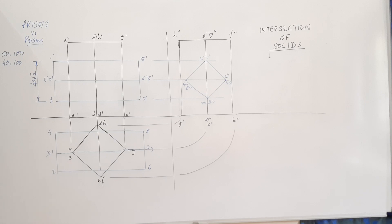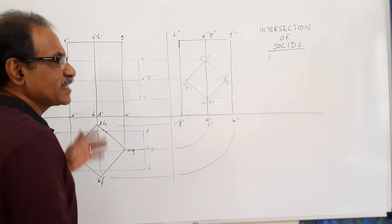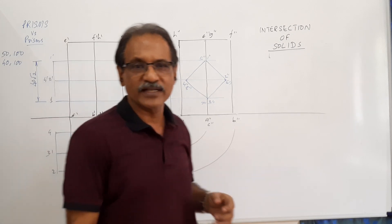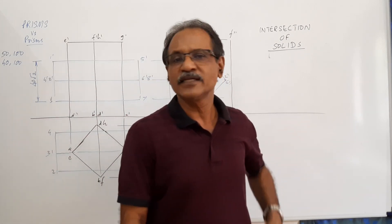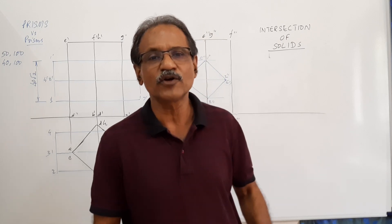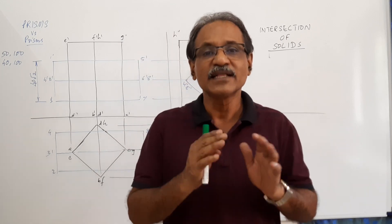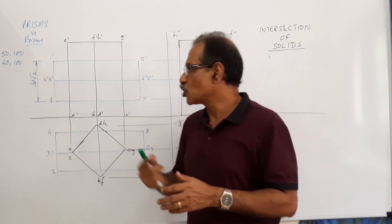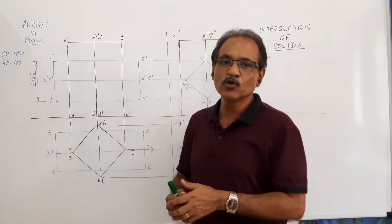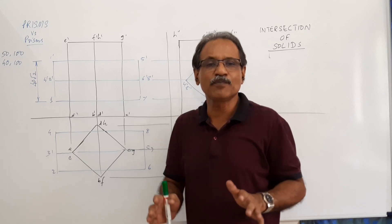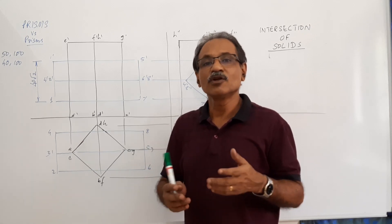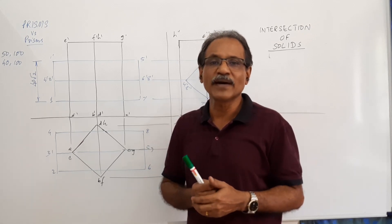After drawing the plan, elevation, and end view, you can then mark the intersection points. This is the key difficulty in this chapter — you must draw all three views first, then start marking the points. Unless you are very familiar with the shape and procedure of drawing, you will find it difficult to manage time.